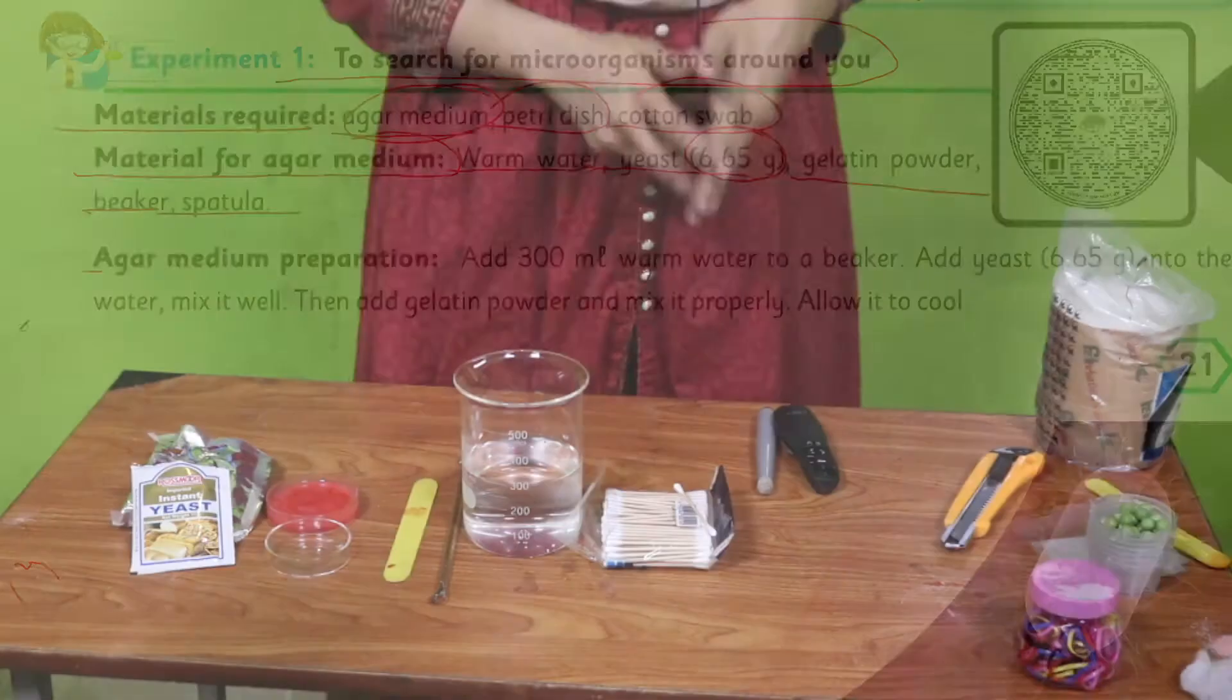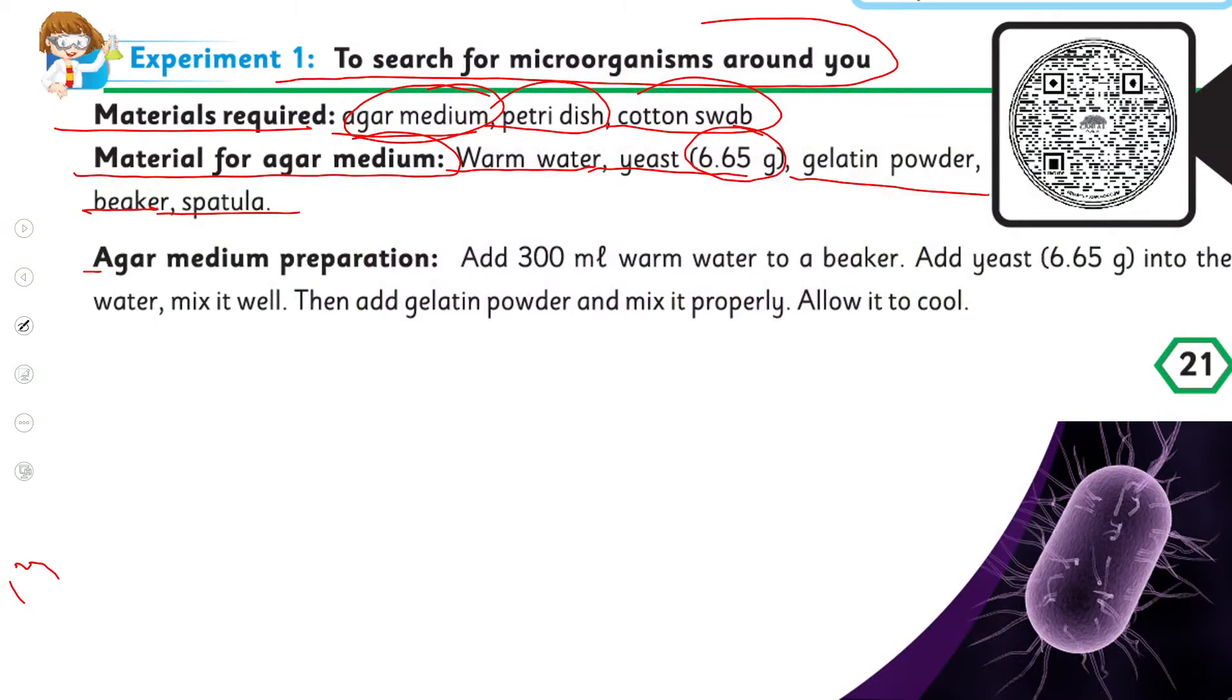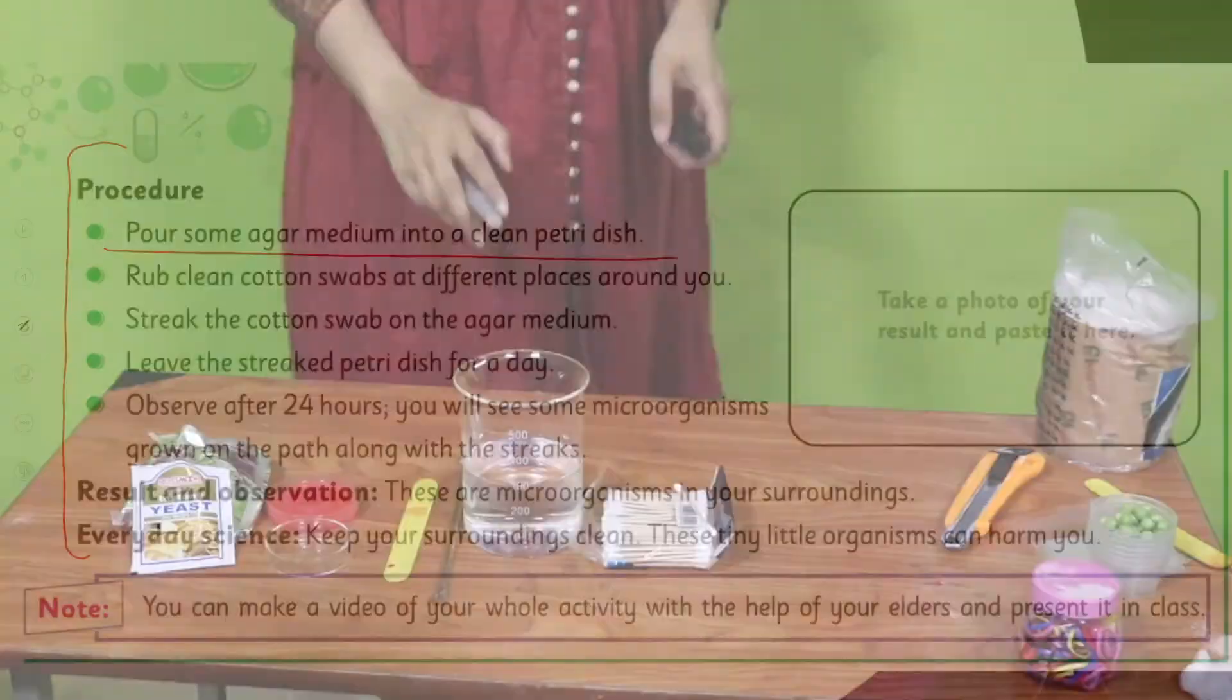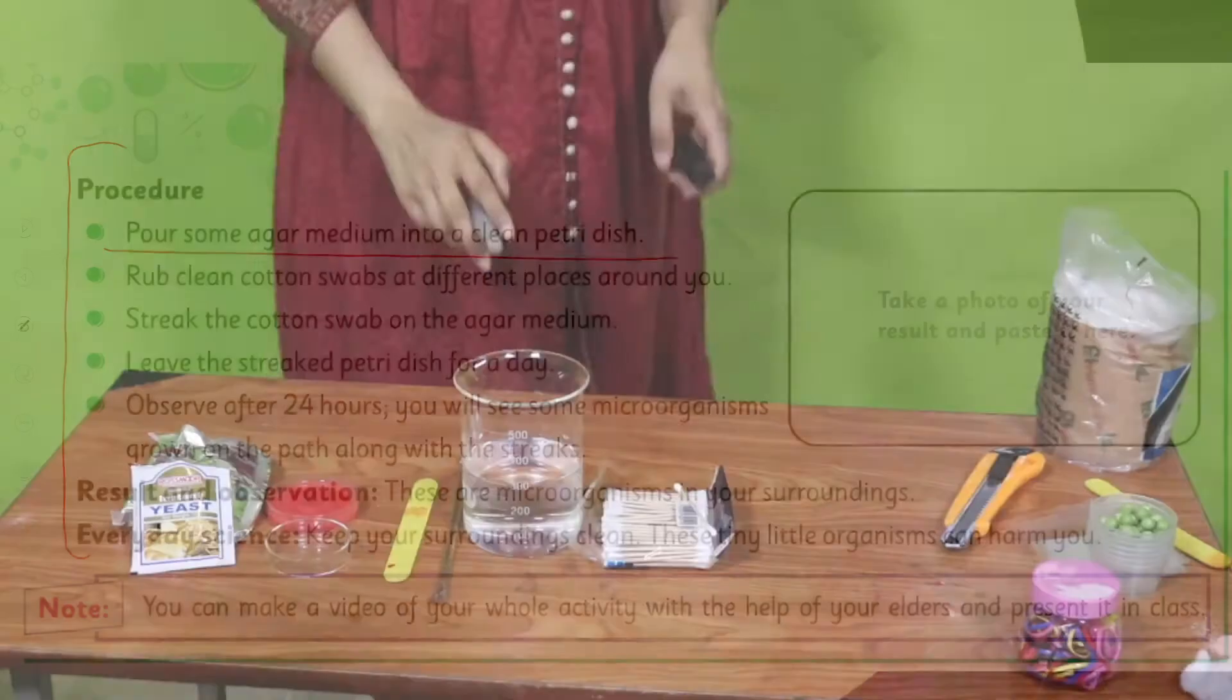For the preparation of agar medium: add 300 ml warm water to a beaker, add yeast which is 6.65 grams into the water, mix it well, then add gelatin powder and mix it properly, allow it to cool. The procedure: pour some agar medium into a clean petri dish. So first let's prepare the agar medium.